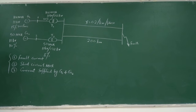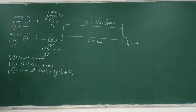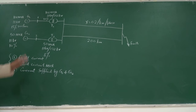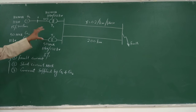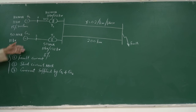To proceed, remember the steps for solving a symmetrical fault. Step one — draw the single line diagram — is already done. Step two is to evaluate per unit reactances of each element. The elements are two generators G1 and G2, two transformers T1 and T2, and two transmission lines.